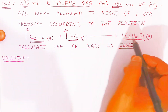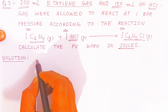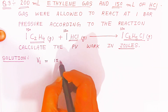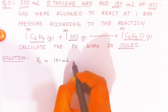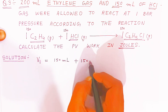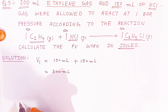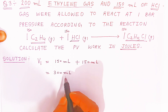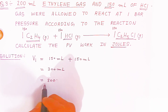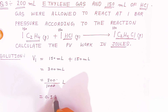You are getting 150 ml of product. So the initial volume is nothing but 150 ml of ethylene gas reacting with 150 ml of SCl gas. So initial volume will be 300 ml. To convert into liters, divide by 1000, giving 0.3 liters.